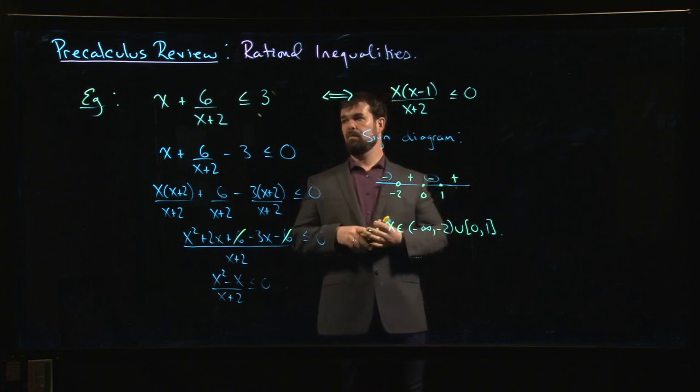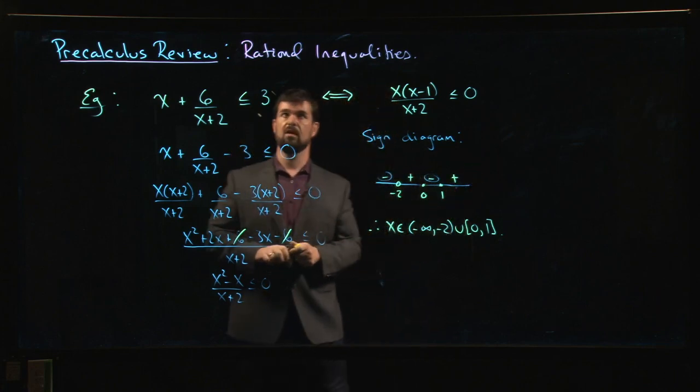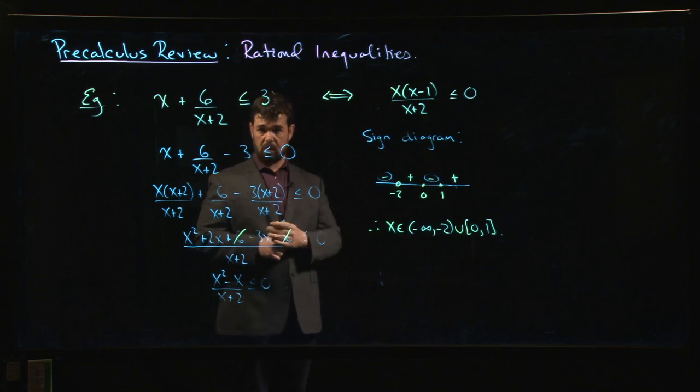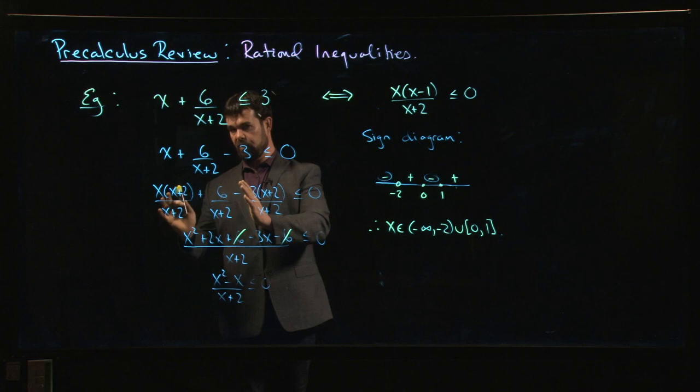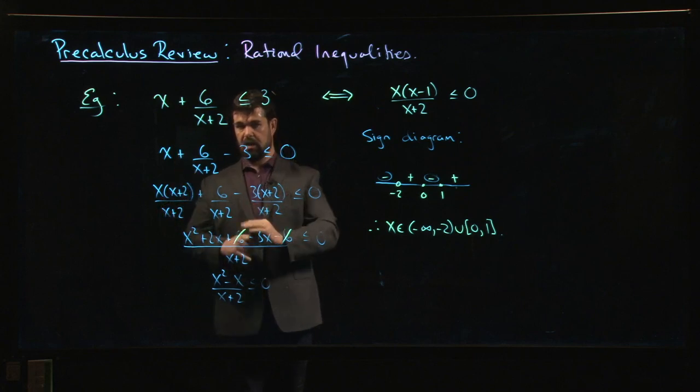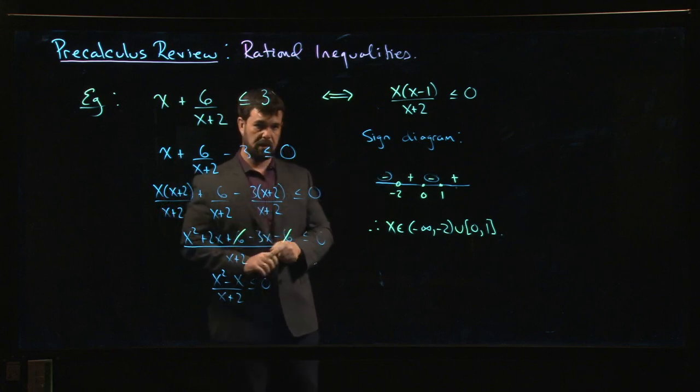So the main thing to remember, if you encounter a rational function and you need to solve an inequality: don't cross multiply. Just like with polynomials, get everything on one side, get a common denominator, and you go to the sign diagram.